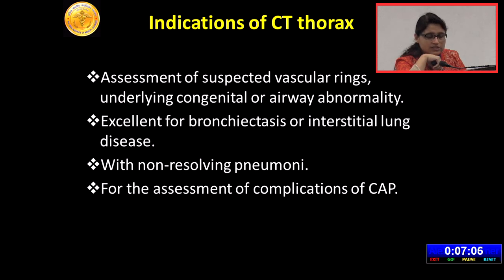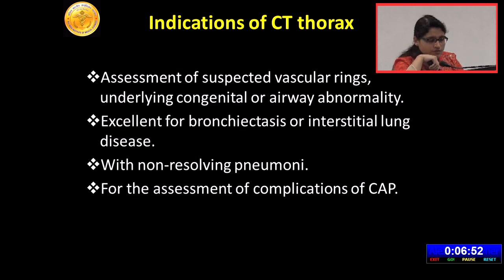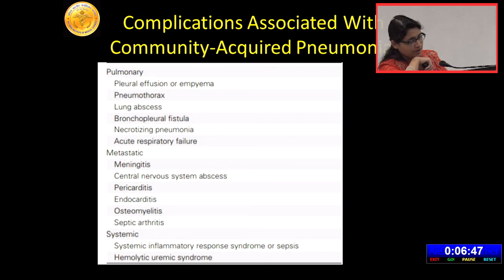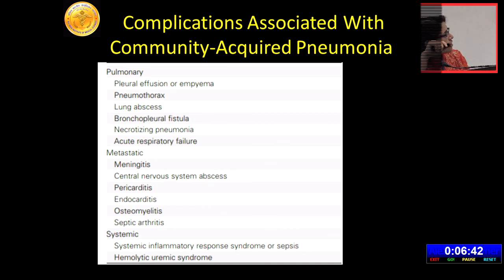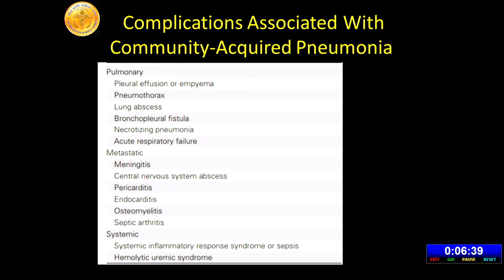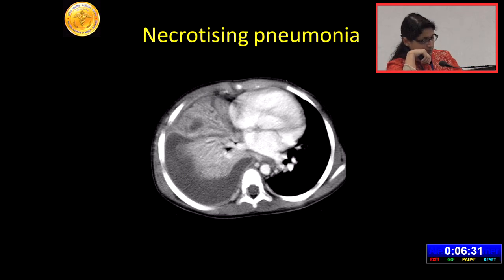CT is excellent for the sequelae of infection like bronchiectasis, for interstitial lung disease, for non-resolving pneumonia to find the cause, and for assessment of complications. Pulmonary complications of community-acquired pneumonia include pleural effusion or empyema, pneumothorax, lung abscess, bronchopleural fistula, necrotizing pneumonia, and acute respiratory failure.